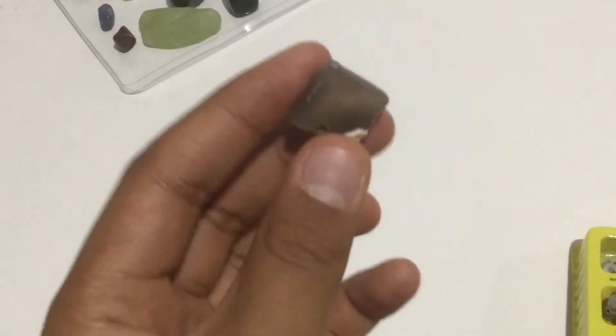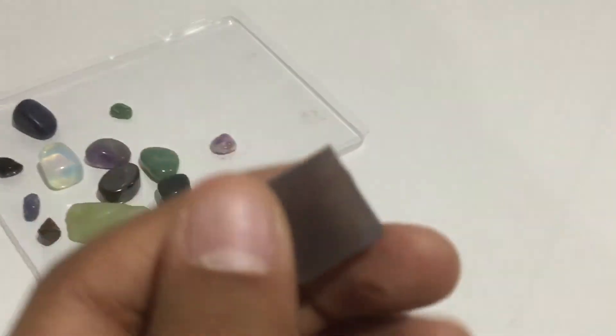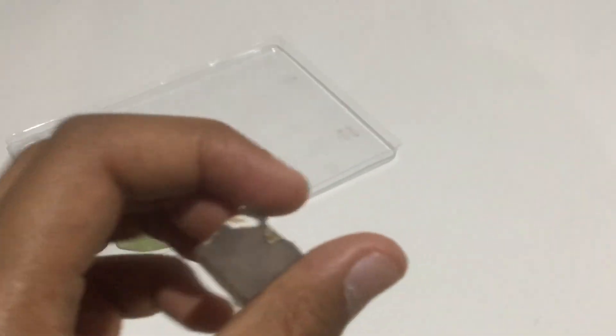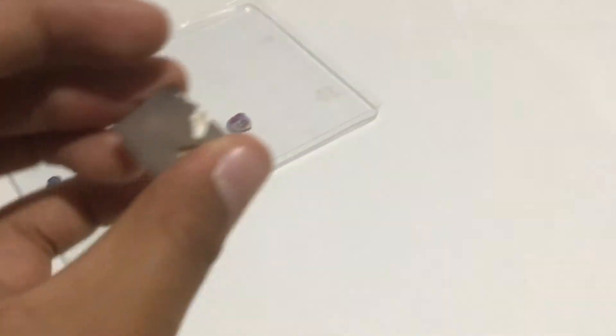The last is chalcedony. This is actually a type of quartz. It has like a white thing right there. It's kind of see-through. You can see, I'm pointing at it right now, but you can't see because it's not actually translucent, which means you can probably see through. This is what you're seeing right now with the chalcedony. It's a type of quartz.